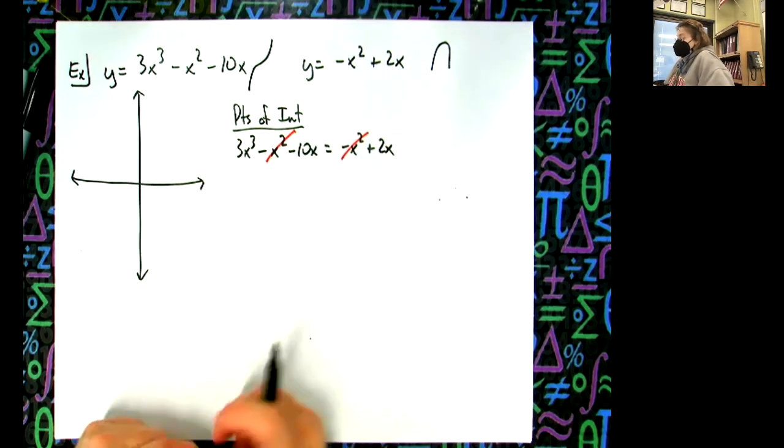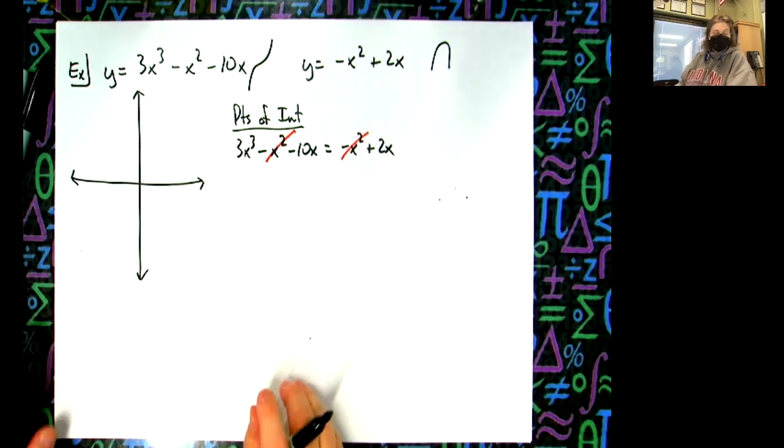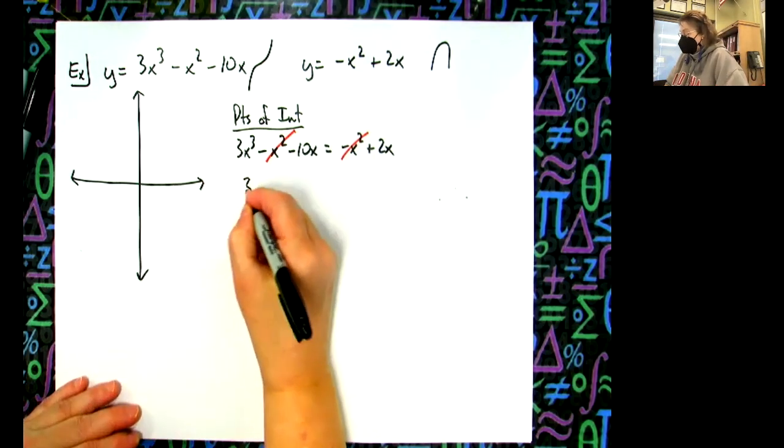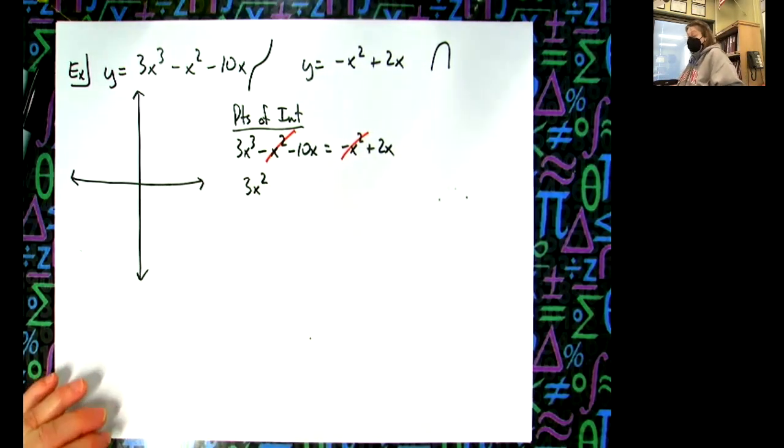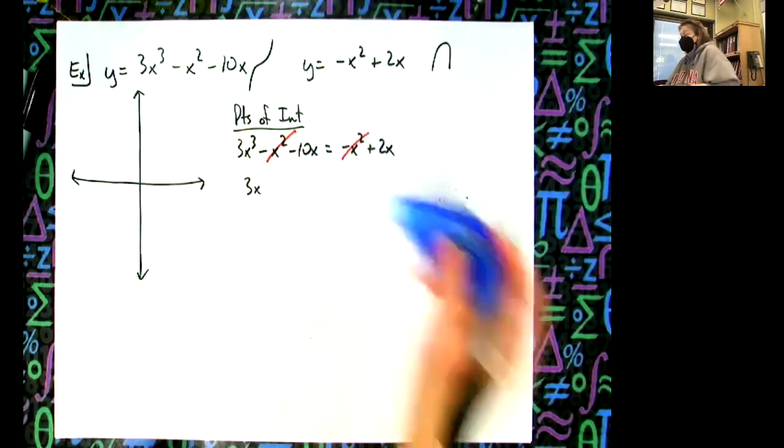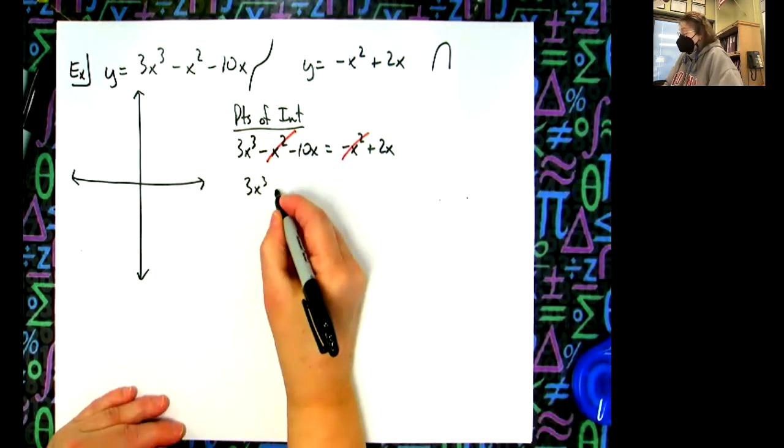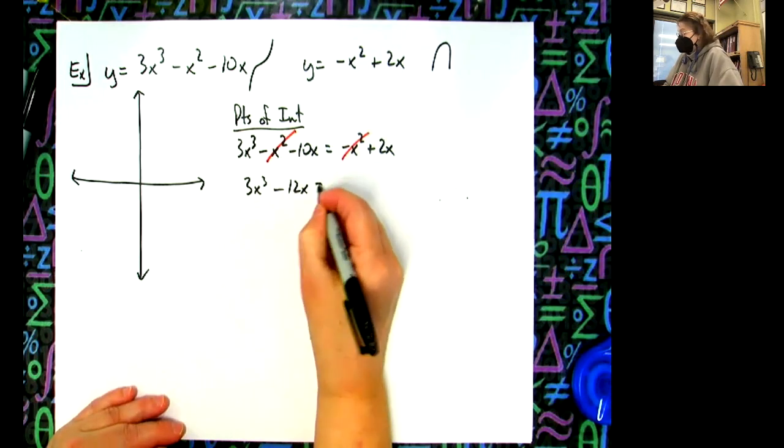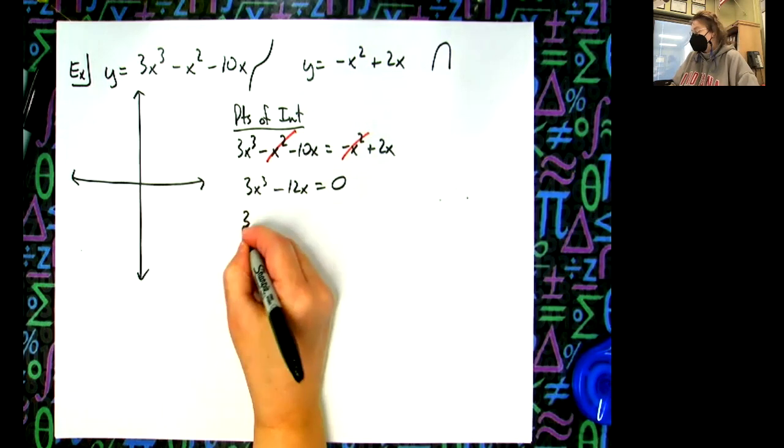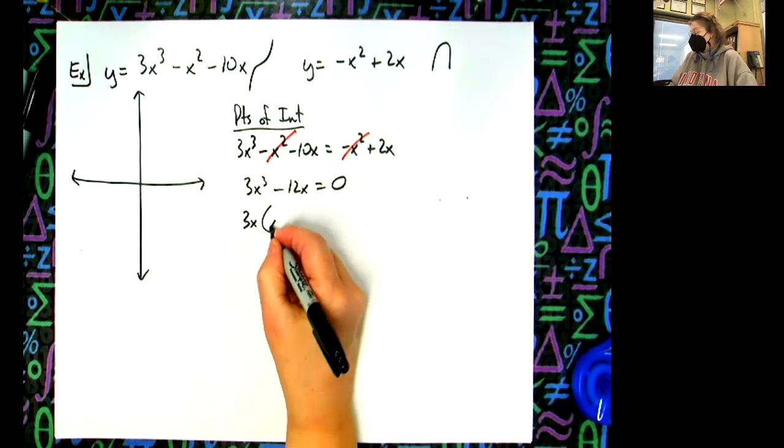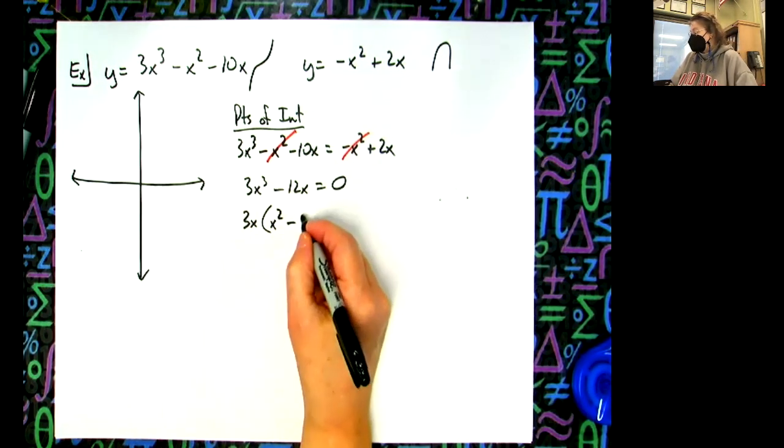And then I need to subtract 2x from both sides, so I'll have 3x³ and then minus 12x. So let me not screw up the algebra. Okay, take out a 3x, then I'll have x² - 4.